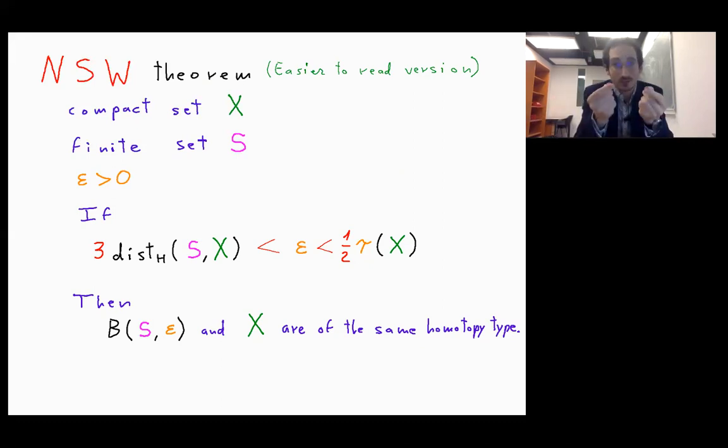So under that condition, we will be able to guarantee that B(S,ε) and X are of the same homotopy type.